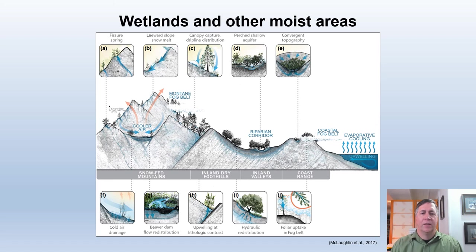Wet areas including wetlands, riparian zones, and fog belts can act as climate change refugia, especially if fed by groundwater. They can remain wet or moist during droughts, and this moisture can also cool the air. Many wetlands, especially if underlain by impermeable clay or water-retaining peat, can hold water for a long time. Wetlands, as long as their soils are saturated or moist, are more resistant to fire and may also protect surrounding uplands from drought and fire.